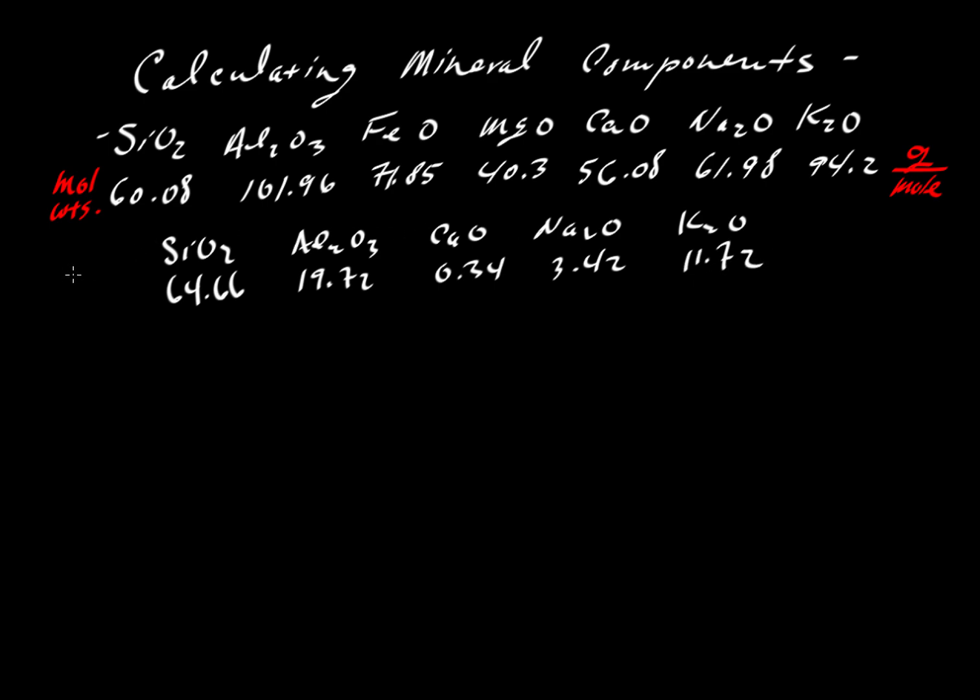These are weight percent values that we would get from an electron microprobe or some kind of x-ray fluorescence spectrometer. The sum should be very close to 100. If we had 100 grams, about 65 of those grams would be SiO2, about 19.7 grams would be aluminum, etc.